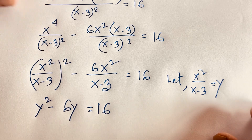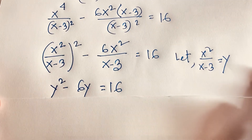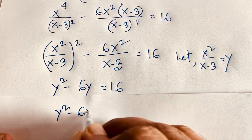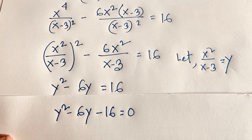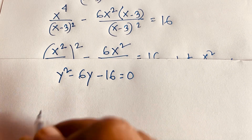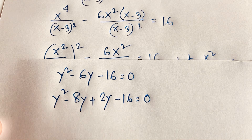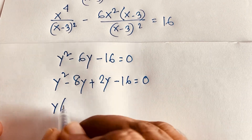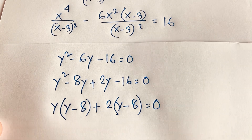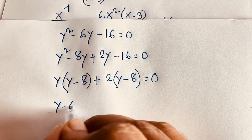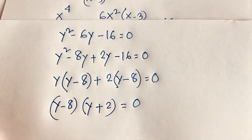With the substitution y = x² / (x - 3), we have the quadratic equation y² - 6y = 16, which becomes y² - 6y - 16 = 0. Factoring by the middle term method: y² - 8y + 2y - 16 = 0, giving y(y - 8) + 2(y - 8) = 0, so (y - 8)(y + 2) = 0.